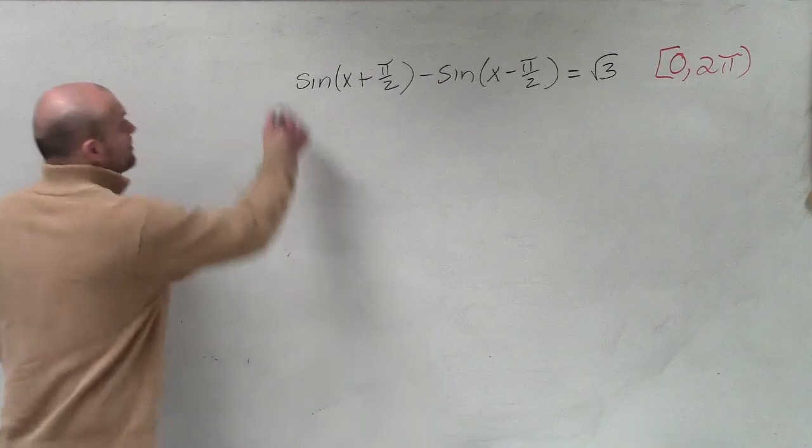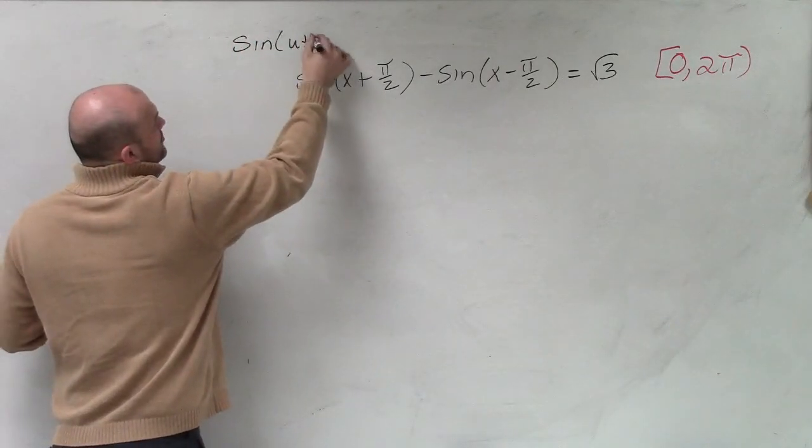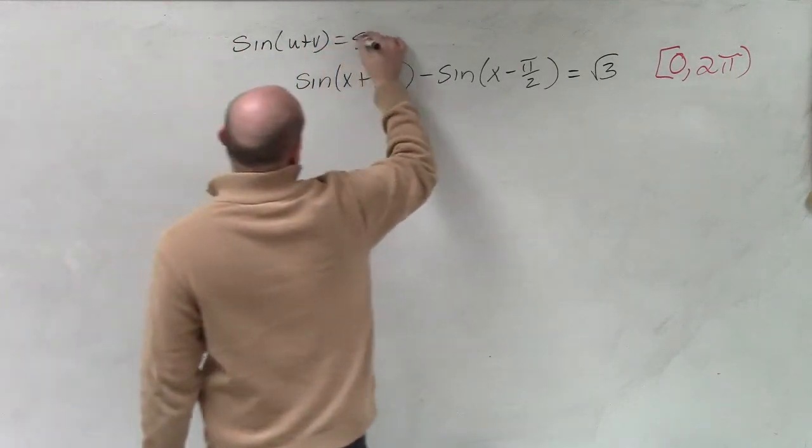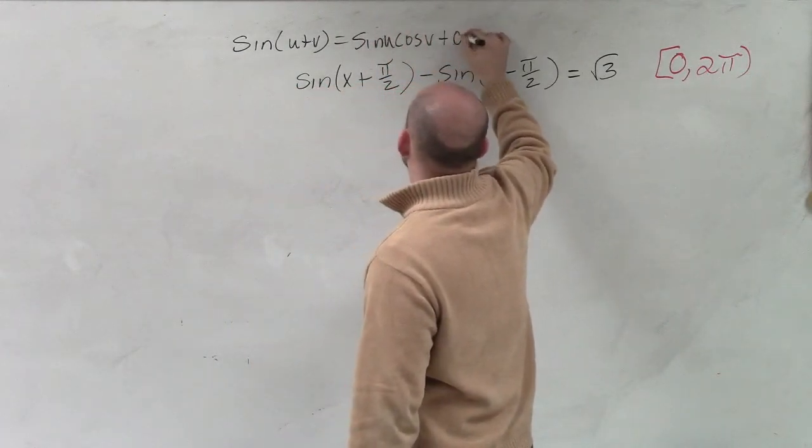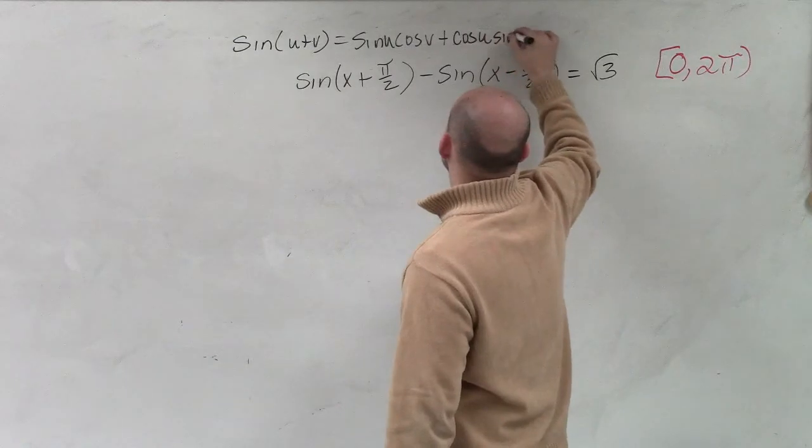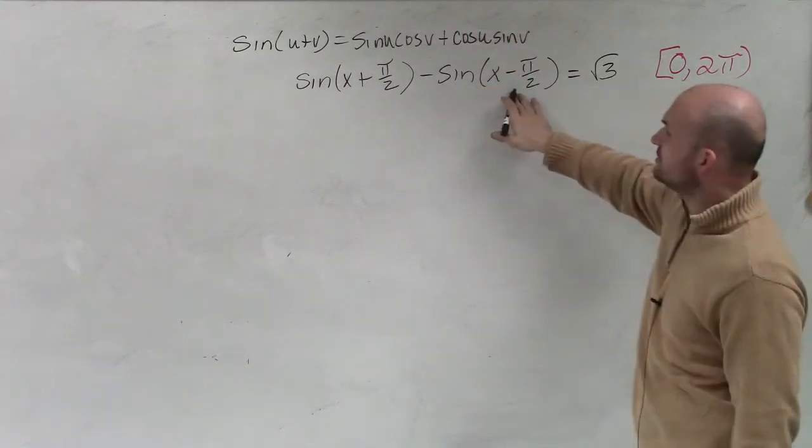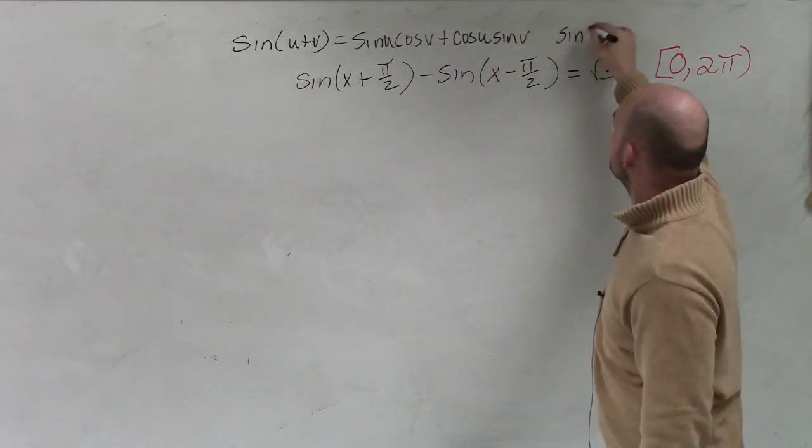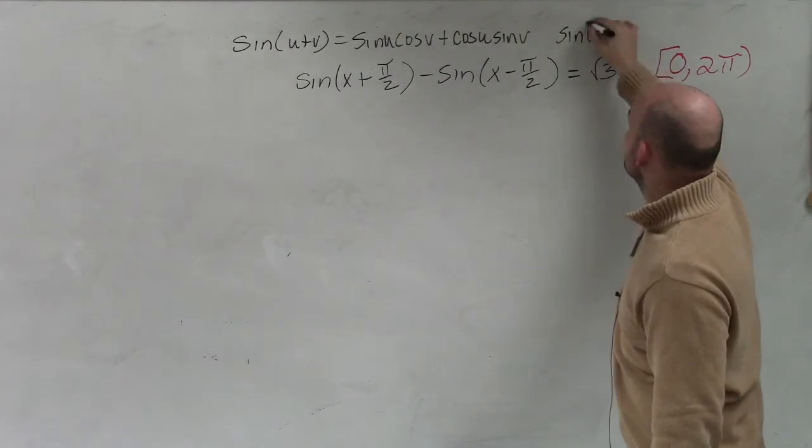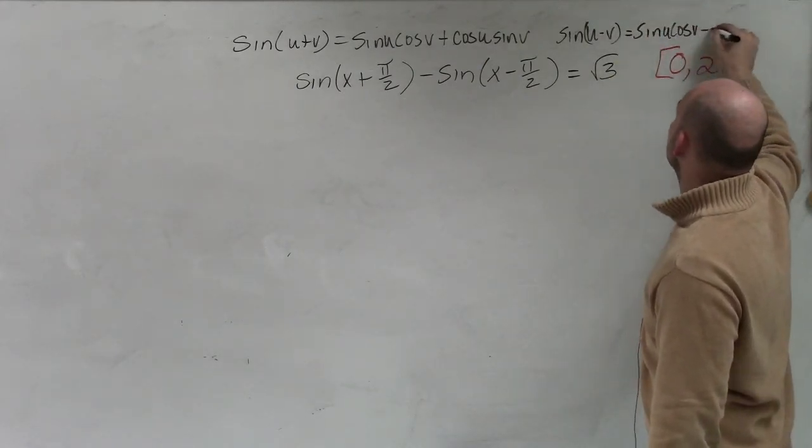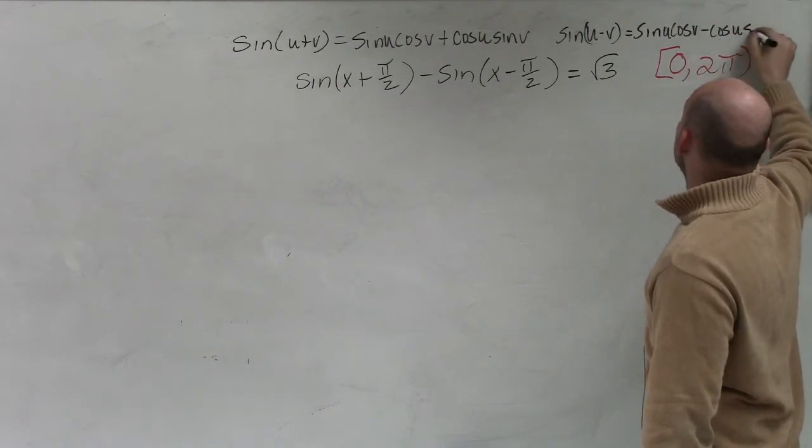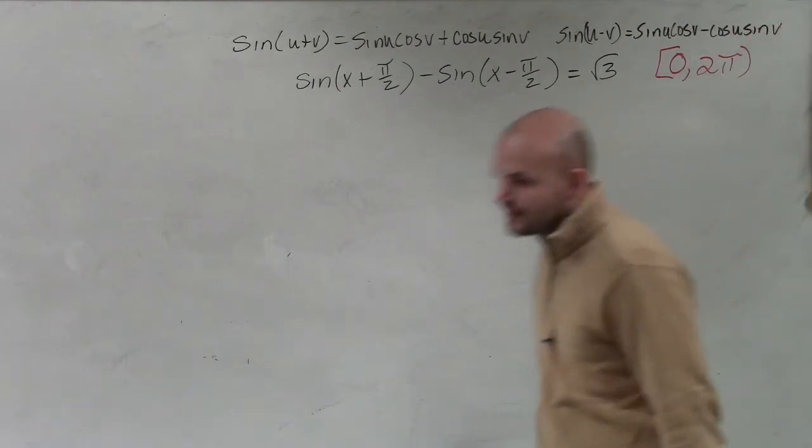So therefore, we're going to apply both of these problems. So you have sine of u plus v. That formula is sine of u times cosine of v plus cosine of u times sine of v. We also have the difference. So that's going to be sine of u minus v, which is equal to the sine of u times the cosine of v minus cosine of u times the sine of v.